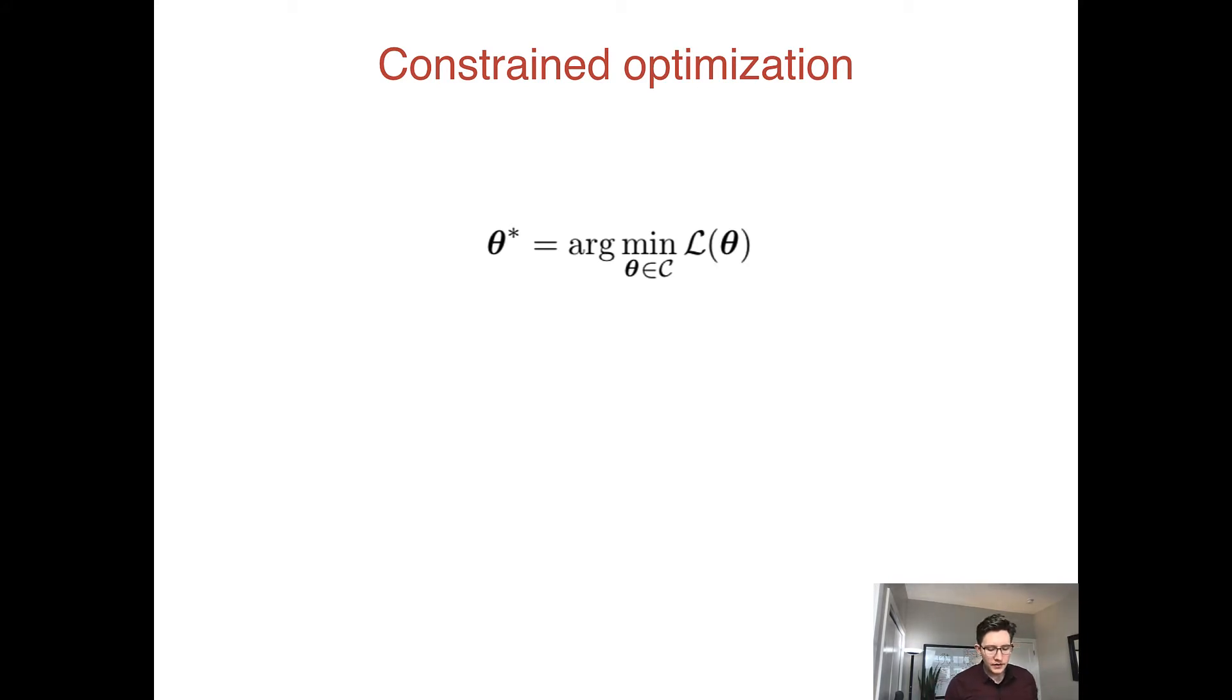We're going to write our constraint as h_i(θ) equals zero, indexed by i because we might have multiple constraints, and we say that some function of theta must equal zero.